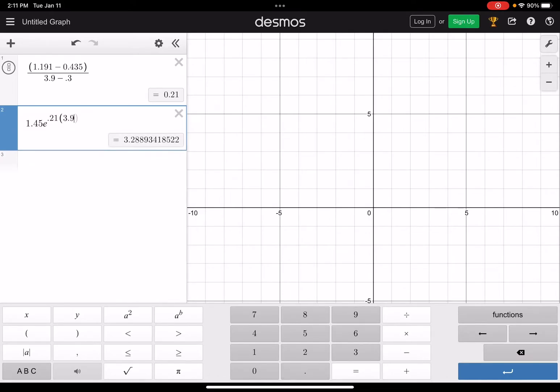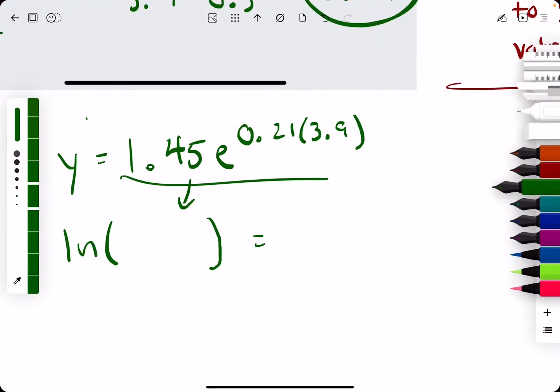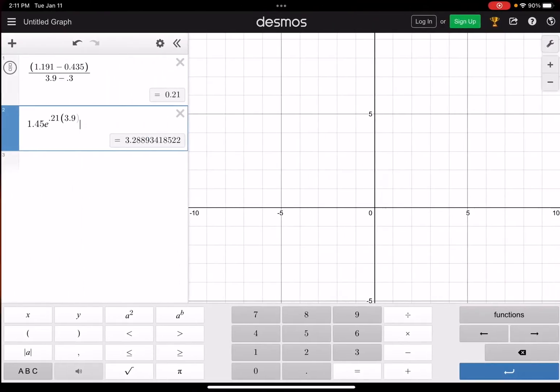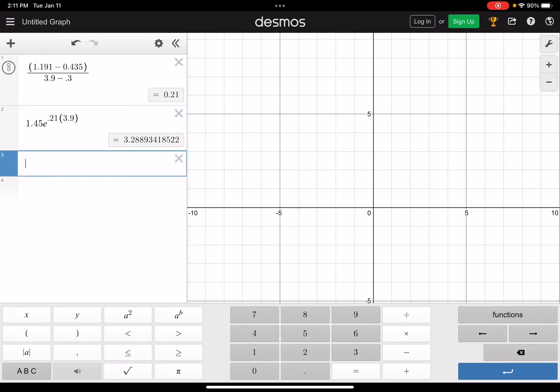That gives us 3.29, if we round. Then we'll go ahead and throw this into the natural log, and we're finding the natural log of that value.